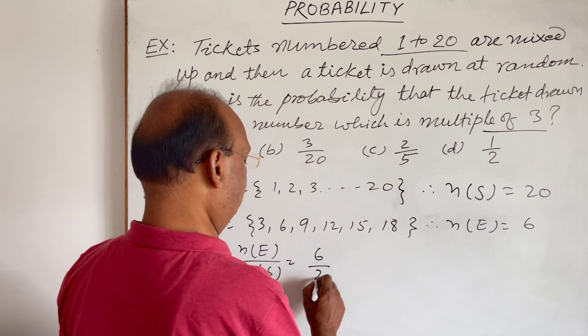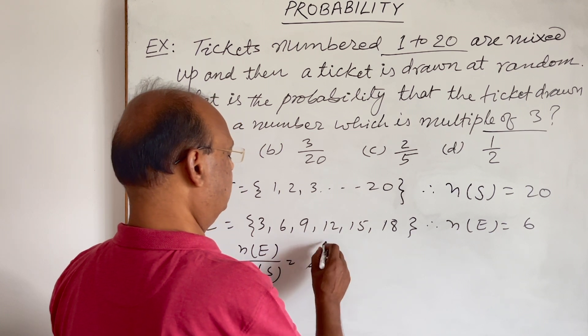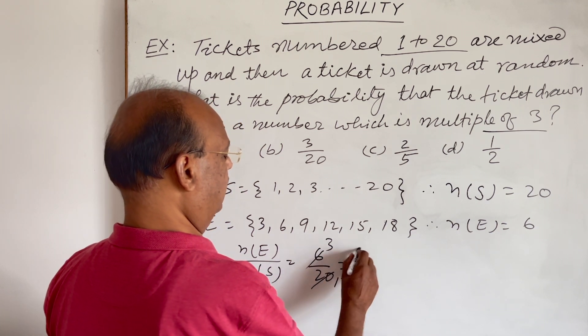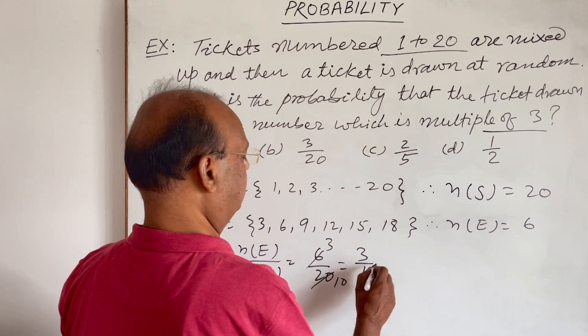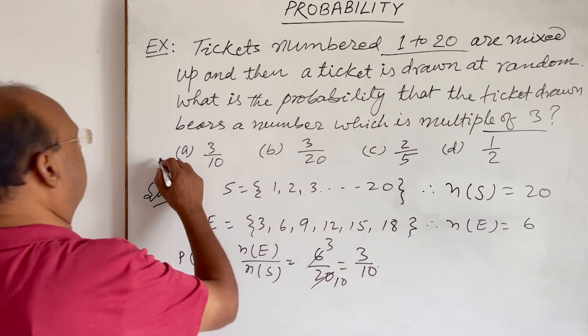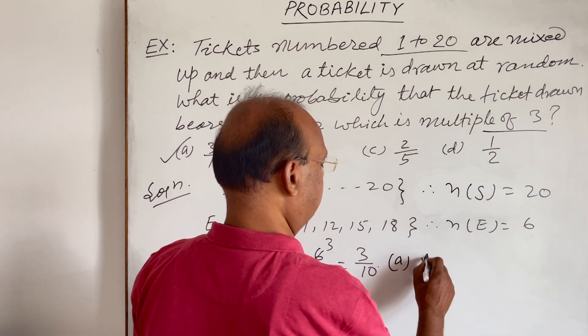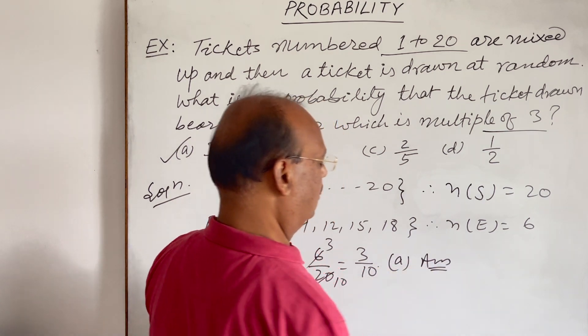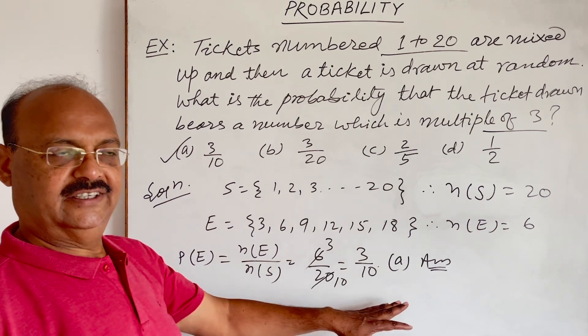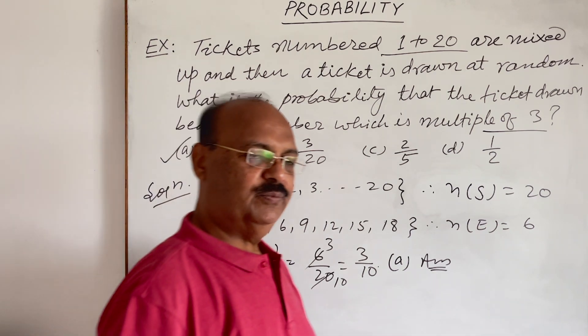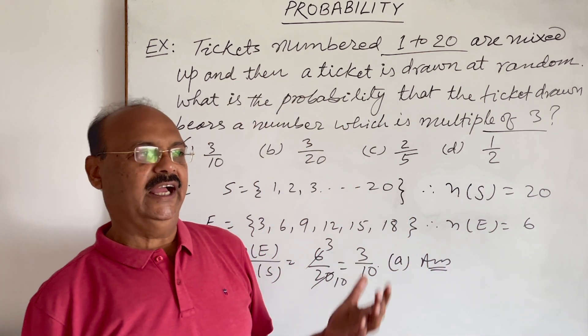n(S) is equal to 20, so cancel it, 3 by 10. So answer is 3 by 10, which means option A is correct. So A is the correct option, this is the answer: 3 by 10.